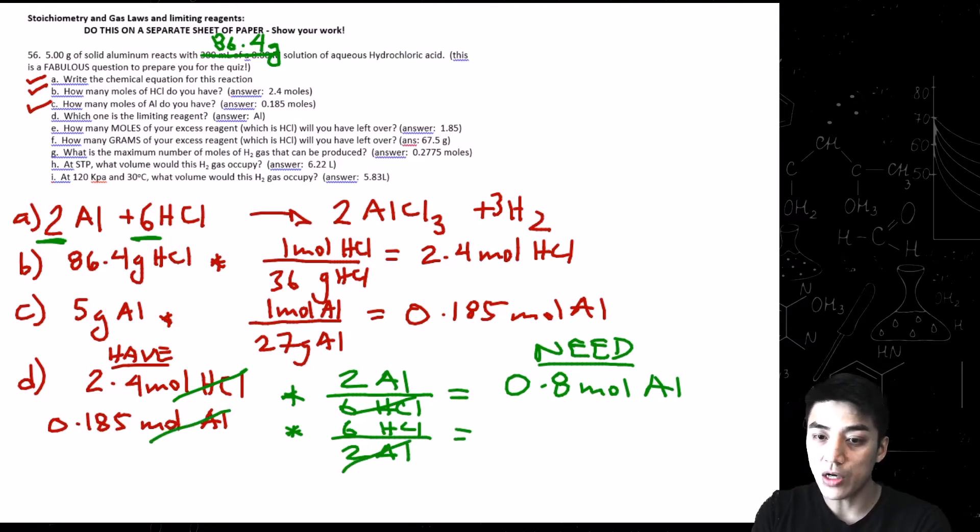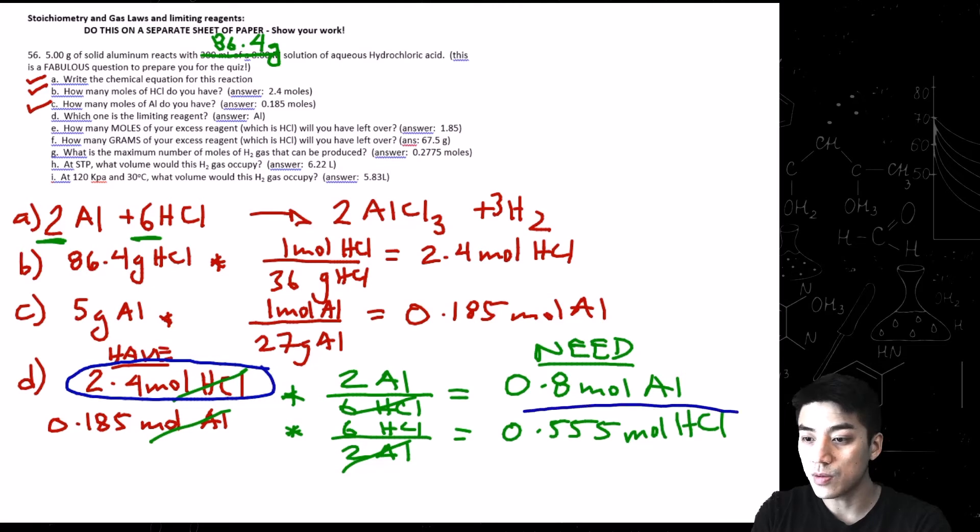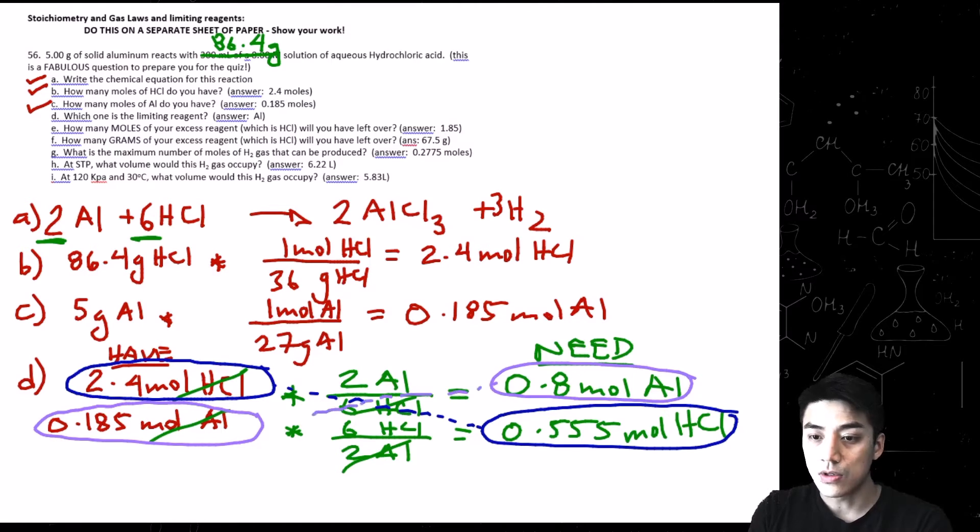Likewise, do the same for the bottom. So 0.185 times 6 over 2 will get you 0.555 moles of HCl. And at this point, HCl, I'm going to circle with the same color. I'm going to use blue here so you can see it easily. And Al, we're going to use the color purple or violet or indigo, whatever you want to call it. Circle those, connect them with the line. Remember how they're supposed to be diagonal from each other? It's supposed to look that way. And then when you glance at it, you can see that Al is the limiting reagent. You simply don't have enough of it. You only have 0.185, but you need 0.8 moles of Al.